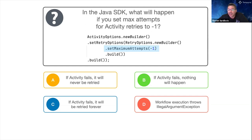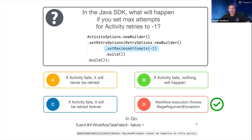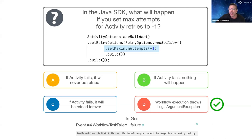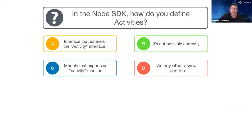If you answered D, you're correct. When workflow execution starts and your activity options are read in the Java SDK, you will get an IllegalArgumentException thrown stating that the value of maximum attempts cannot be negative. In the Go SDK, it's the same - you can see in the Temporal web UI that maximum attempts cannot be negative on the retry policy.